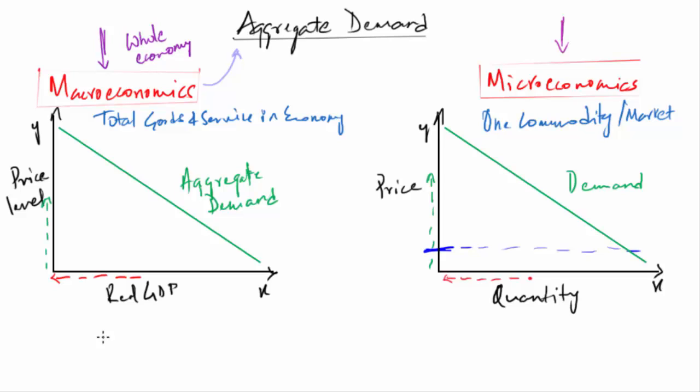To re-emphasize the point, in microeconomics we are looking at demand of an individual commodity or market, hence we just use the term demand. Whereas in macroeconomics we are dealing with total demands of goods and services produced in an economy, and that's why we use the term aggregate demand. And if there is more demand for Indian goods and services, then the GDP of our country will increase.